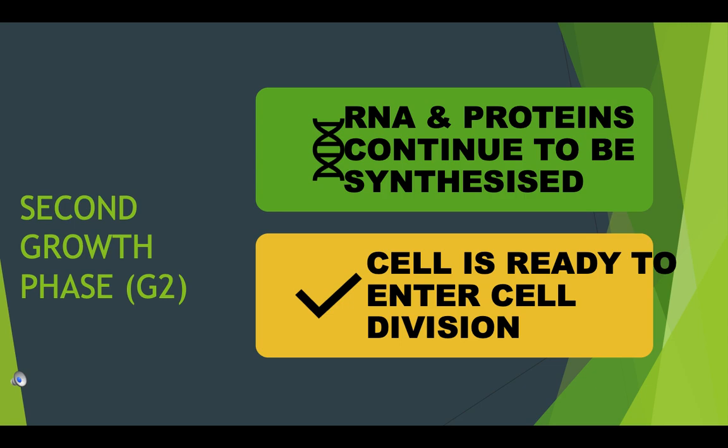G2 phase, or gap two phase, is the third sub-phase of interphase in the cell cycle, directly preceding mitosis. It follows the successful completion of S phase, during which the cell's DNA is replicated. G2 phase is a period of rapid cell growth and protein synthesis during which the cell prepares itself for mitosis.